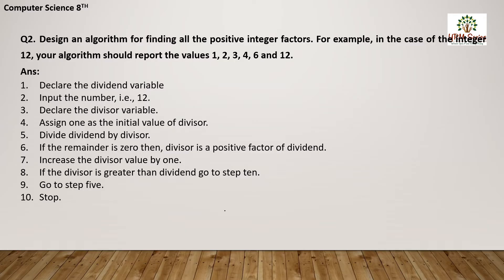When we go to step number 5, we again divide the dividend by the divisor. The new value of the divisor is 2. So 12 divided by 2 gives remainder 0, so it is also a positive factor. Similarly, we increase the value to 3, 4 — when we increase the value and go to step 5, 12 is not divisible by 5, so 5 is not displayed in the output. Same for 6 — 6 is displayed; 7, 8, 9, 10, 11 are not displayed. The last factor is 12.